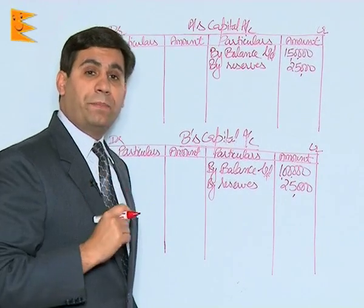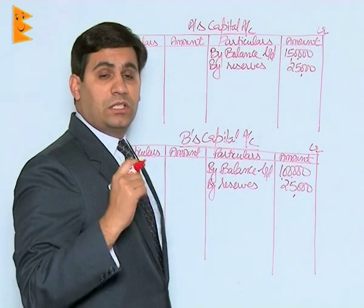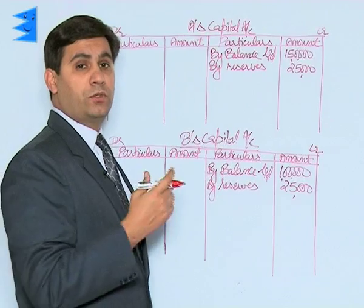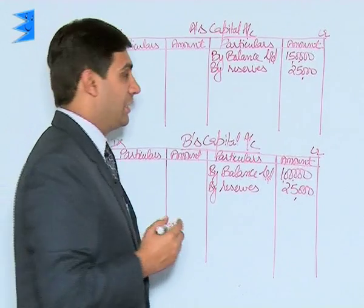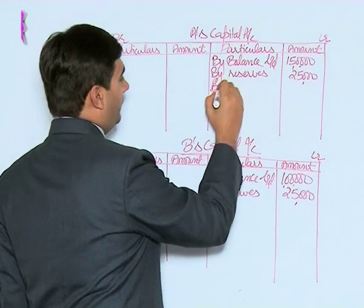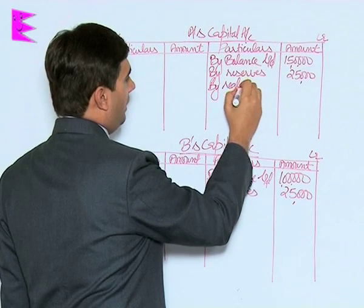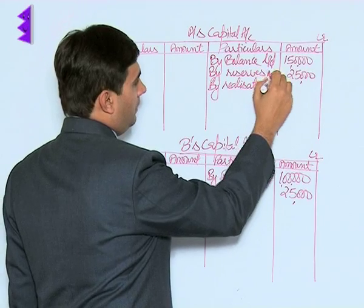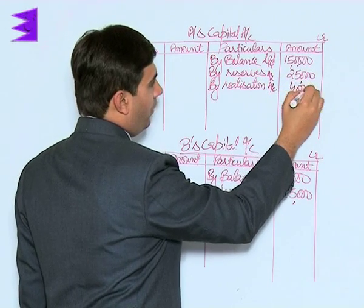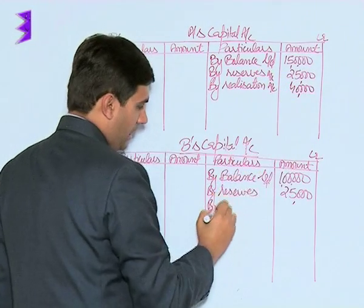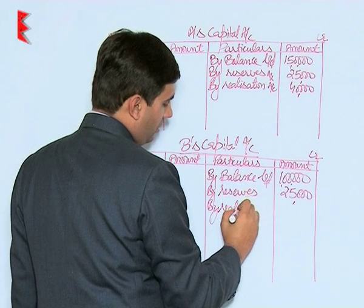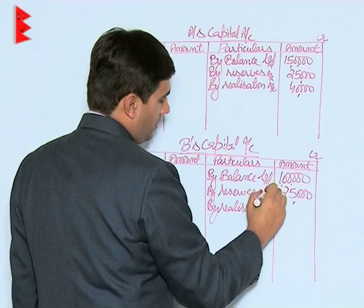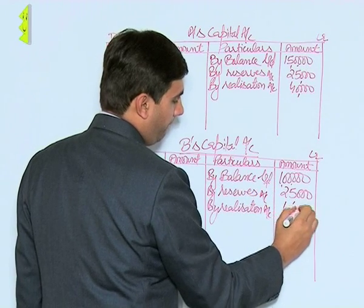The realization account showed a profit of ₹80,000 which is transferred to A and B as ₹40,000 each. So we record 'by realization account ₹40,000' for A and 'by realization account ₹40,000' for B in their respective capital accounts.